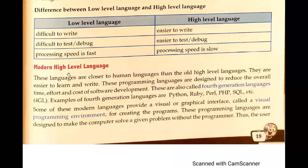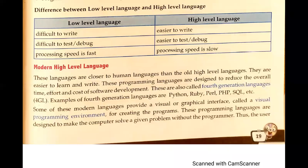Now it's time to understand the modern high-level language. What do we mean by modern high-level language? It is about the latest technologies and the latest languages. These languages are closer to human languages than the old high-level languages. We say they are very close to human languages because we can understand them in a very easy manner.